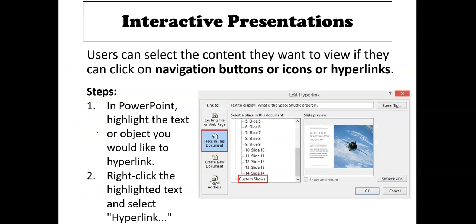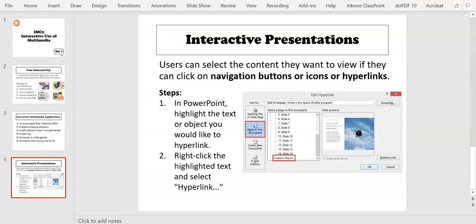In an interactive presentation like PowerPoint, users can select the content that you want by clicking on navigation buttons. How to place your navigation buttons? These are the steps in PowerPoint. Highlight the text or object that you want to hyperlink, then right-click and select hyperlink. And you will see this window. If it's a link to the same PowerPoint, you will put it placed in this document, and you choose the slide that you want and press OK. We'll see more later on in chapter three.